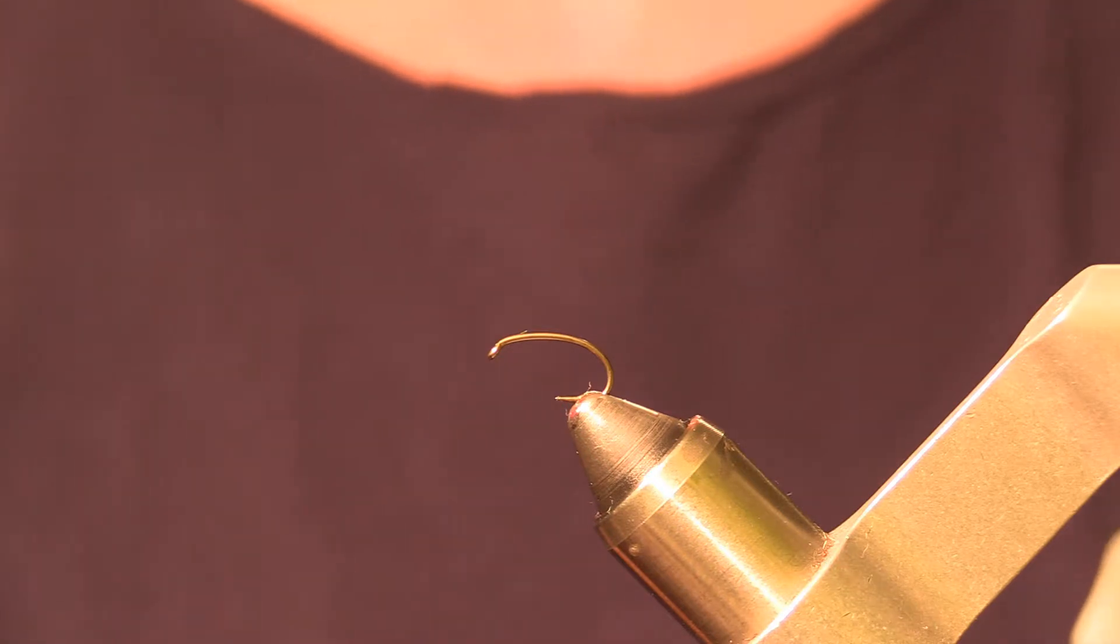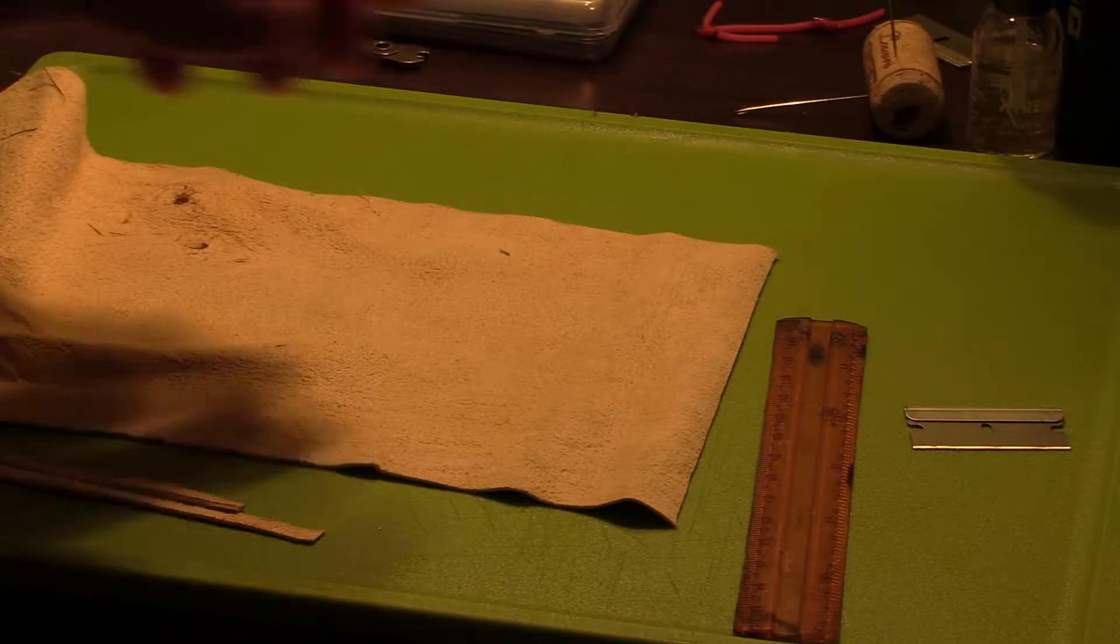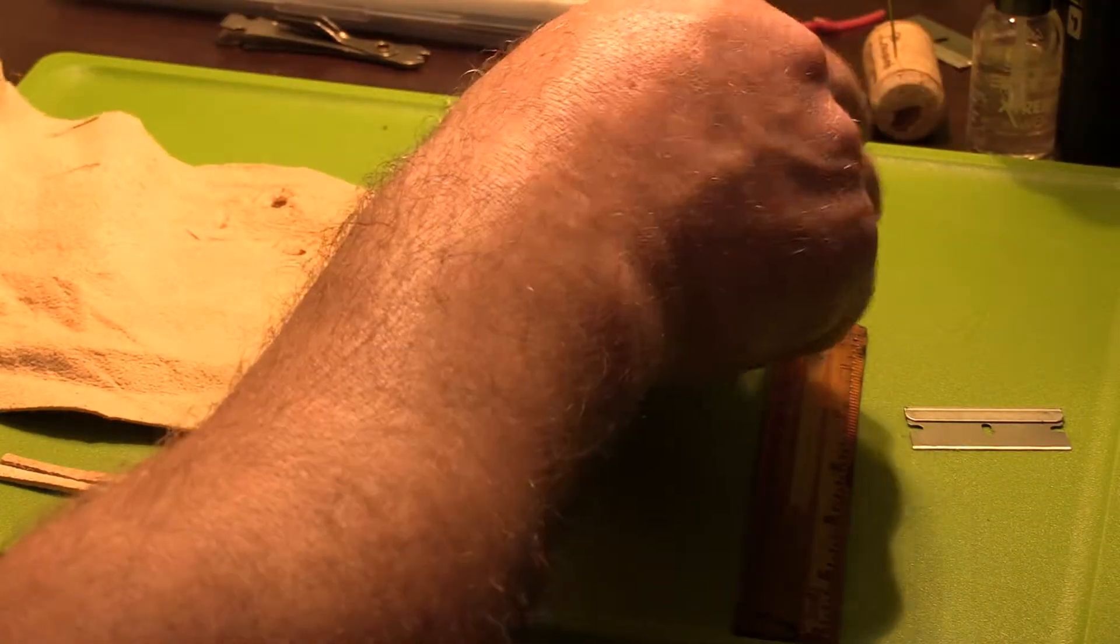Let's get started. For the material for the chamois worm, we have a piece of chamois leather. Here I cut a small section out of a chamois rag that I bought at a big box store.